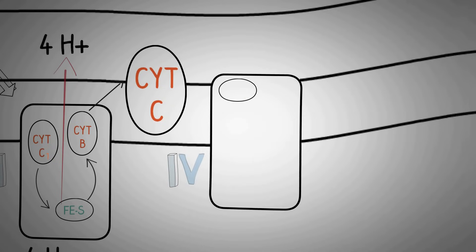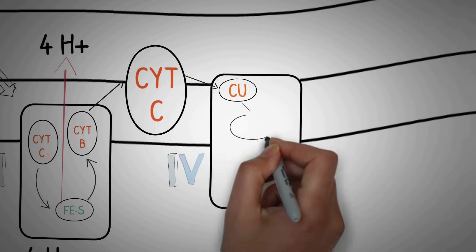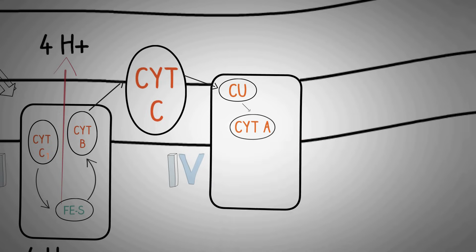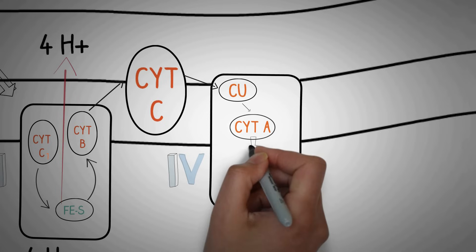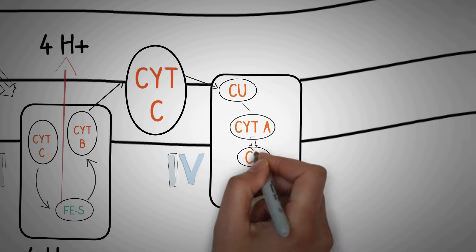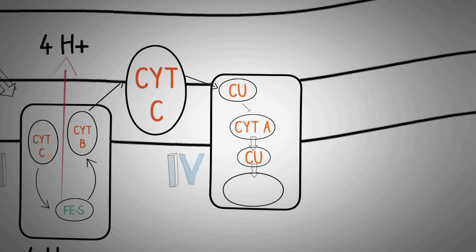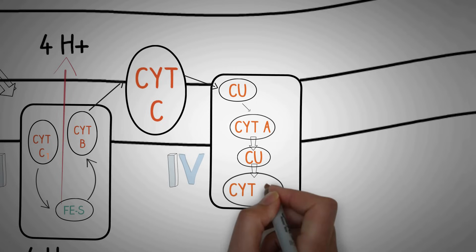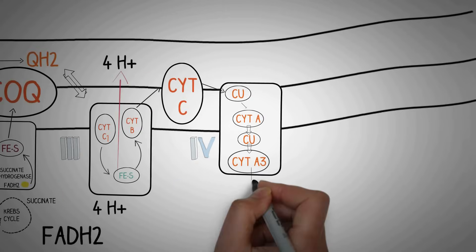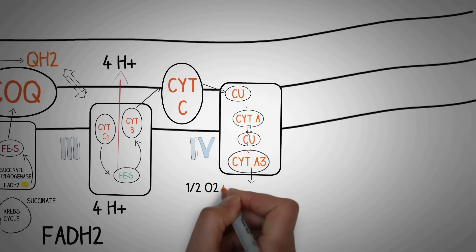Cytochrome c donates the electrons to the fourth complex. In the fourth complex, the electrons are first received by type A copper ions. The copper ions then donate the electron to cytochrome a, which then transfers the electron to type B copper ions. These copper ions then transfer the electrons to cytochrome a3.